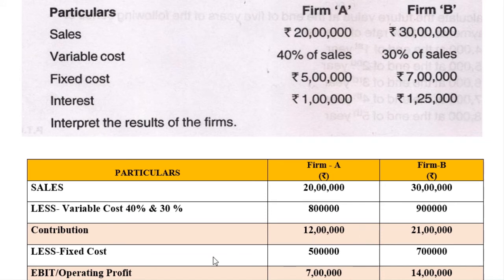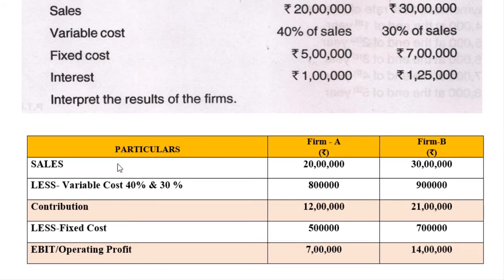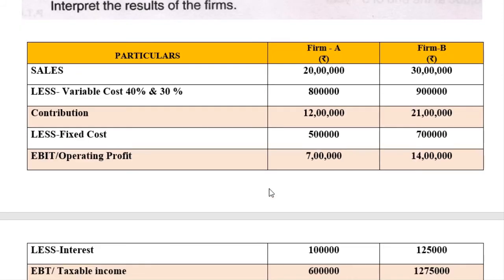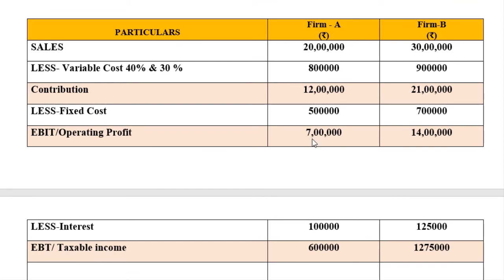Now deduct interest. Firm A interest is rupees 1 lakh; Firm B interest is rupees 1,25,000. Therefore EBT: Firm A is 7 lakh minus 1 lakh equals 6 lakh; Firm B is 14 lakh minus 1,25,000 equals 12,75,000. This completes the income statement for both firms.